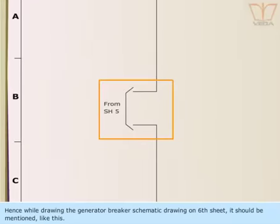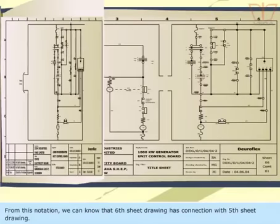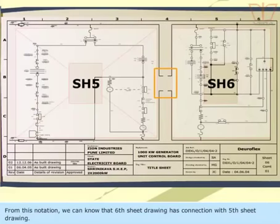Hence, while drawing the generator breaker schematic drawing on sixth sheet, it should be mentioned like this. From this notation, we can know that sixth sheet drawing has connection with fifth sheet drawing.